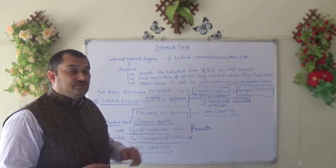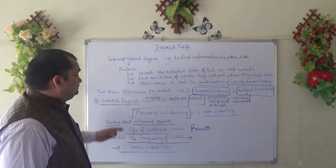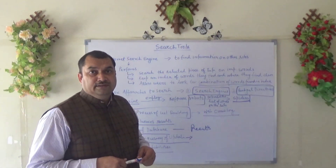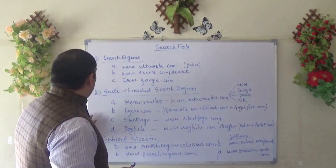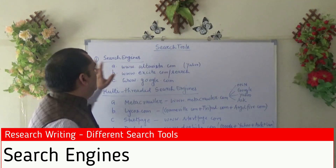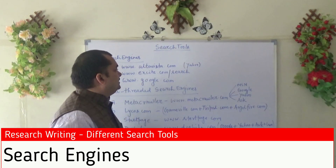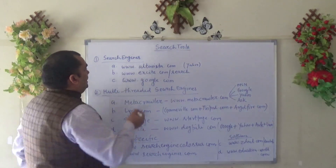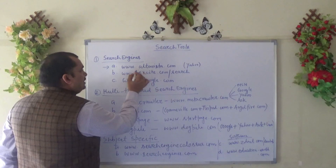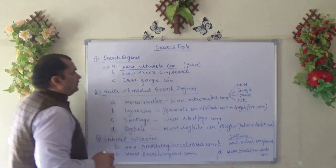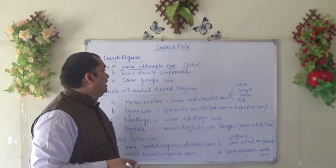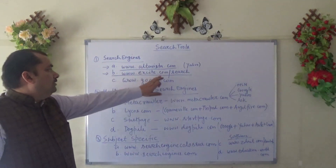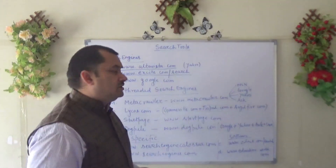These three factors mainly influence results based on the keywords we provide to the search engine. Now let's look at the different search engines available. There are three major ones we will talk about as search tools. The first is altavista.com, which is a very good website for getting information. The second is excite.com/search, which is also a very good search engine that pulls information based on our keywords.